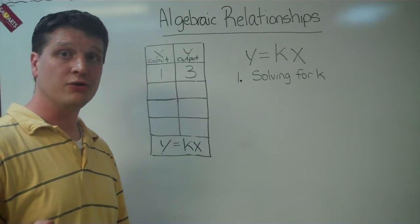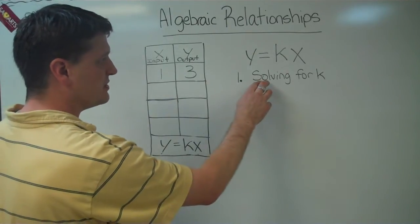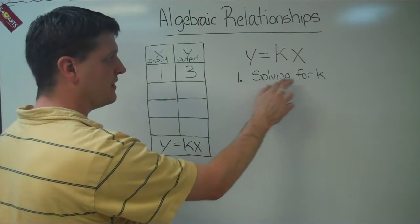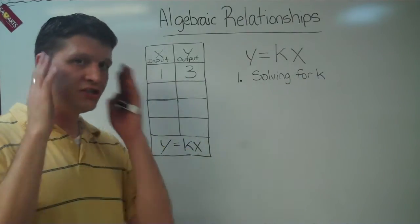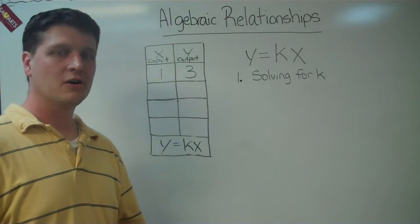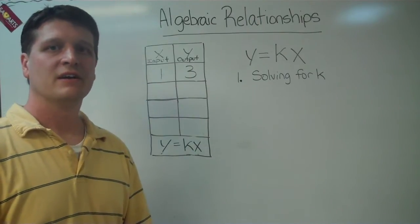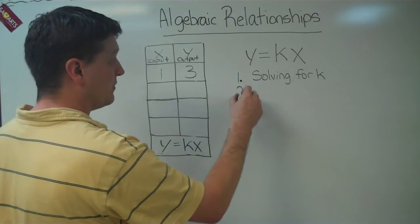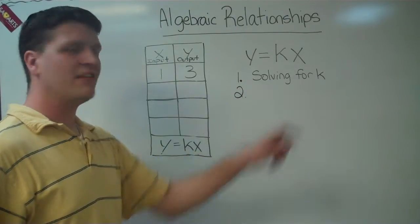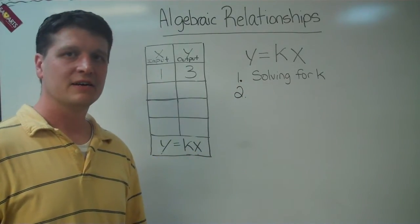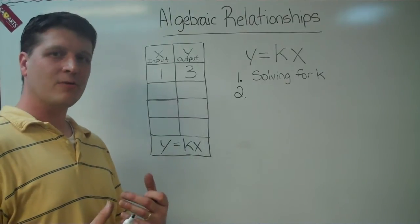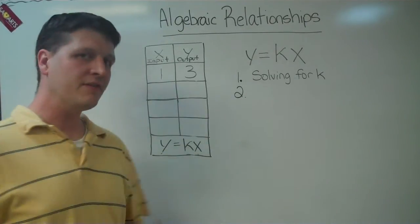The first thing I tell my class to do is put down that you are solving for k. That way it's in your mind, and you're thinking about it. I'm solving for k. So I've got my equation standing right in front of me. The second step I tell them is, now that I know I'm solving for k, I need to take my simple equation and write it up there so it's right in front of my face.